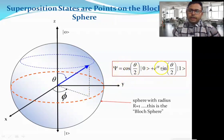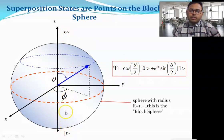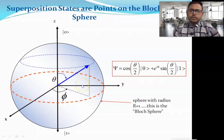The state |0⟩ is at the north pole and |1⟩ at the south pole. The angle θ can vary from 0 to π (polar angle), and φ can vary from 0 to 2π (azimuthal angle). The radius of the sphere is r = 1. This is the Bloch sphere.